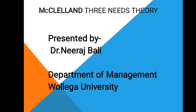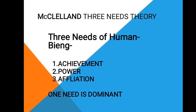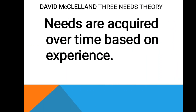It is called the three needs theory because we are talking about three needs: achievement, power, and affiliation. Out of these three needs, one need is always dominant as per McClelland. Unlike Maslow's Need Hierarchy Theory with five predetermined needs in a particular order, McClelland's motivational theory says that needs are acquired over time based on experience within the organization.